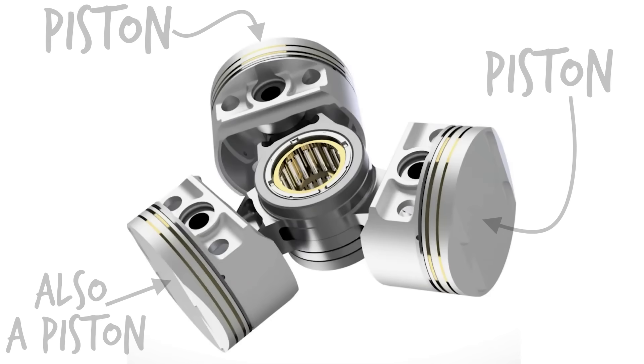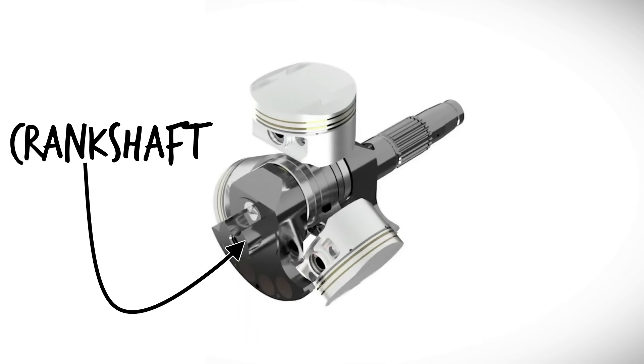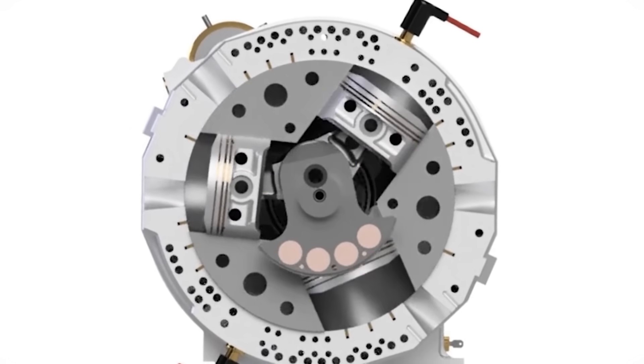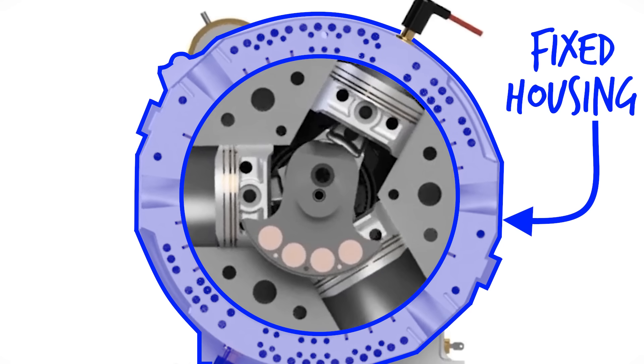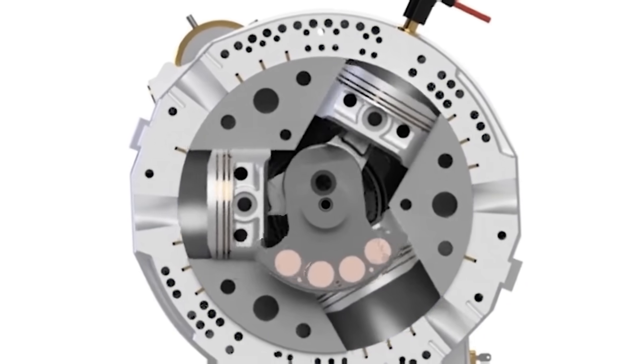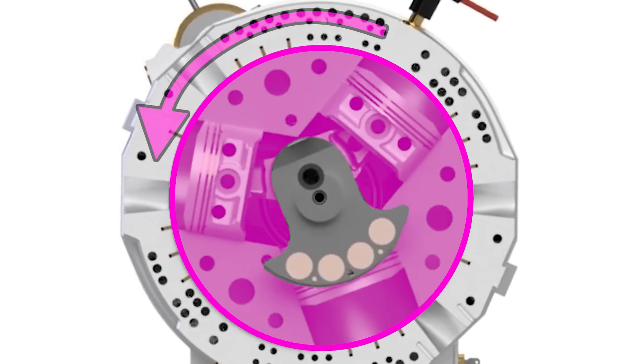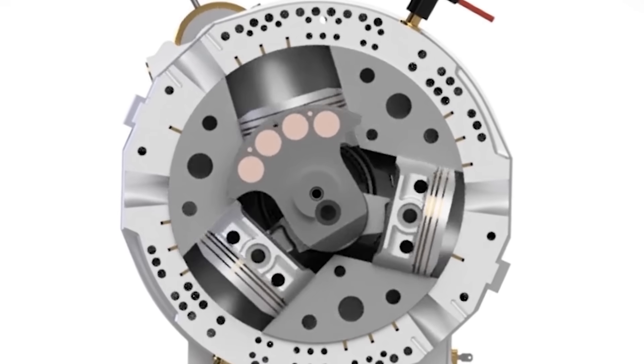The bi-rotary engine consists of three pistons attached to a central crankshaft. The pistons complete their strokes inside a round cylinder block. This round cylinder block rotates inside a fixed housing. And here we have our first benefit. The cylinder block rotates in the opposite direction to the crankshaft, which means that they partially cancel out each other's